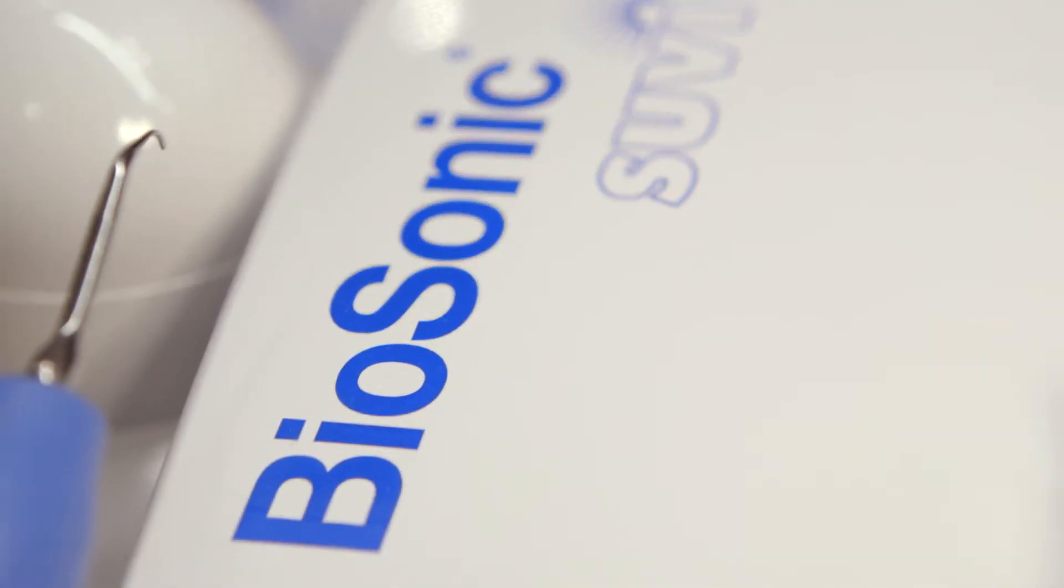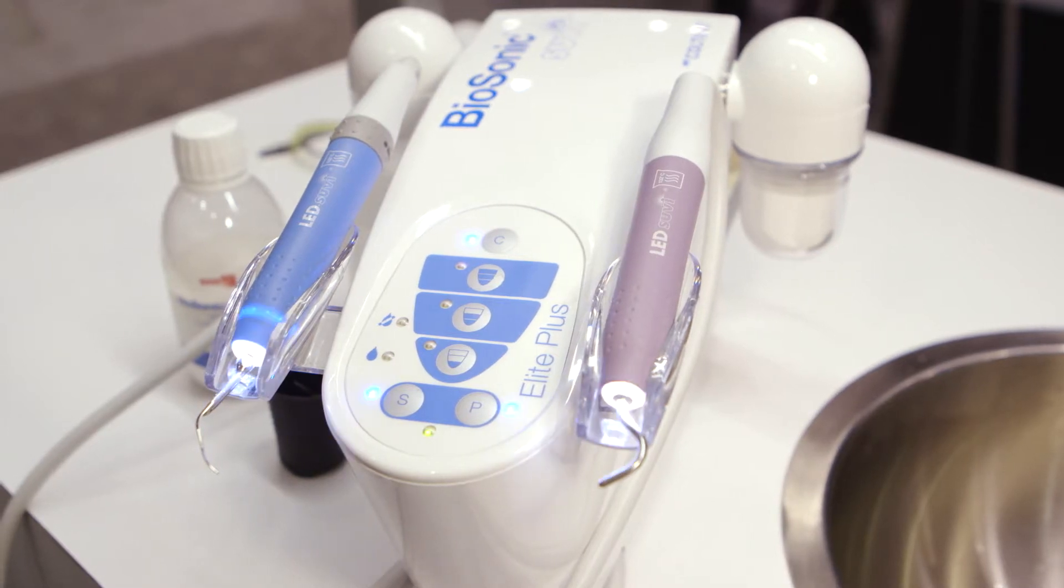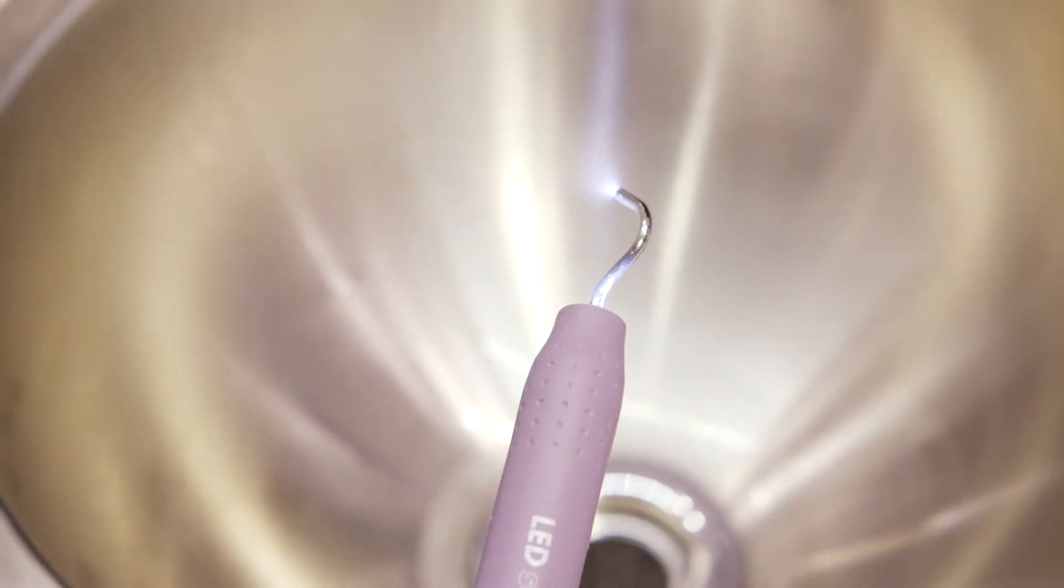The Biosonic Suvi Elite Plus is a combination unit of a piezo scaler and an air polisher. It's a single unit with two different handpieces: one that acts as the power scaler and one that acts as a power polisher.